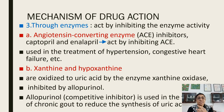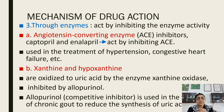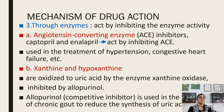Action through enzyme — inhibiting enzyme activity, like angiotensin converting enzyme. Drugs like captopril and enalapril inhibit angiotensin converting enzyme, useful in treatment of hypertension and congestive heart failure. Xanthine and hypoxanthine are oxidized to uric acid by the enzyme xanthine oxidase, which is inhibited by allopurinol. Allopurinol is used in treatment of chronic gout to reduce synthesis of uric acid.